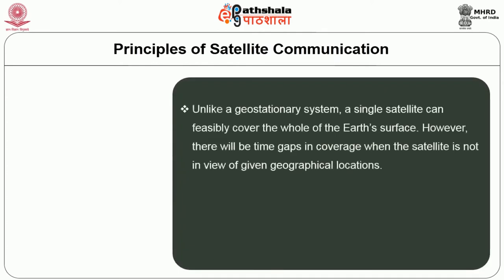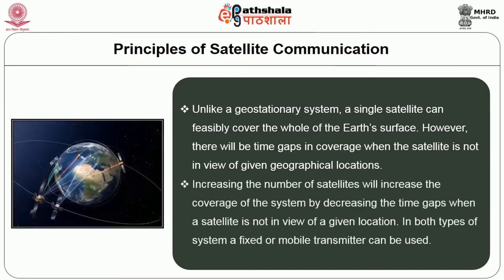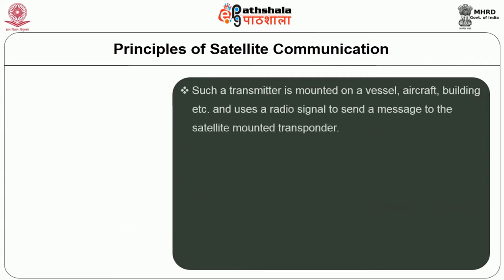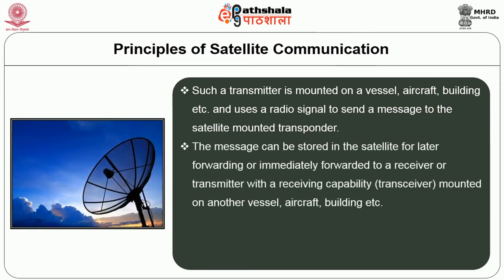When messages are transmitted to the satellite, they may also be stored in the satellite until it comes into range of a receiving earth station. Unlike a geostationary system, a single satellite can feasibly cover the whole of earth's surface. However, there will be time gaps in coverage when the satellite is not in view of a given geographical location. Increasing the number of satellites will increase the coverage of the system by decreasing the time gaps. In both types of system, a fixed or mobile transmitter can be used, mounted on a vessel, aircraft, or building, using a radio signal to send a message to the satellite-mounted transponder.